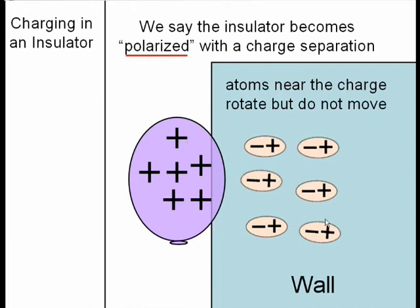In this case, because the wall is an insulator, it has no free electrons, and therefore the electrons are not allowed to move. They are bound to the atoms — they are just rotating, so the negative side is facing the same direction as the balloon.